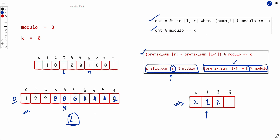As you can see, we maintain a map and increment frequencies one by one as we move forward, iterating over the array once. The overall time complexity is O(n). Space complexity is also O(n) because in the worst case there are n distinct values of (prefix_sum + k) modulus modulo, so the frequency array can grow to O(n) size.